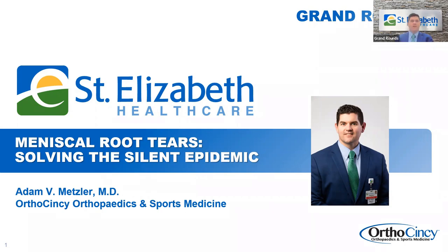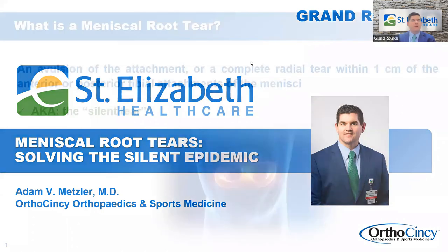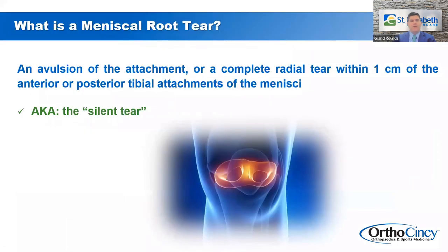I appreciate that kind introduction, and we'll go ahead and get started on our meniscal root tear conversation and lecture today. We're going to talk initially about meniscal root tears and talk about the treatment and how we're going to take care of that. A meniscal root tear is an avulsion of the attachment or a complete radial tear within one centimeter of the anterior-posterior-tibial attachments of the menisci. It's also known as a silent tear, and most of these tears are going to be in the posterior aspect of the meniscal root relative to the anterior.